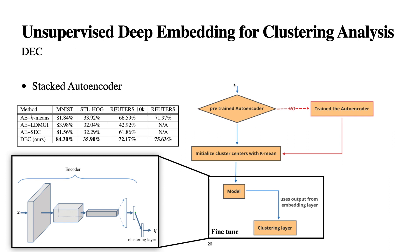In DEC, first they pre-train a stacked autoencoder. Once the model is trained they do an initial guess with K-means clustering, and then fine-tune the model with a clustering layer — this clustering loss uses the EM algorithm as soft assignment. They fine-tune the model based only on this clustering layer. Here we can see that this method already shows the best results among compared methods across different datasets.